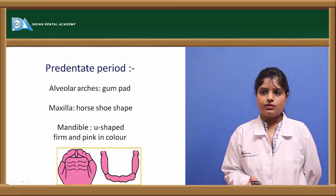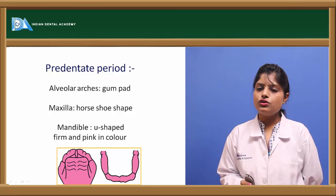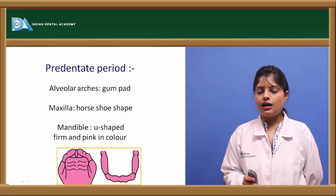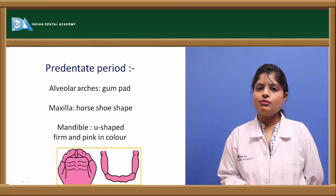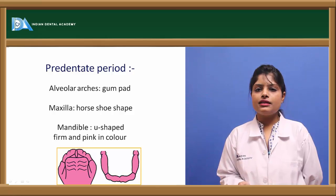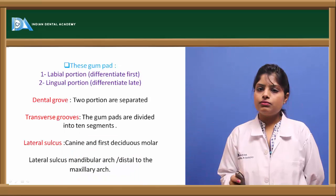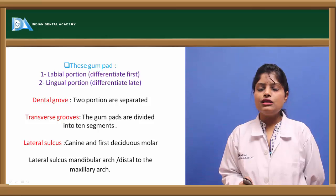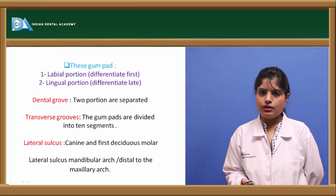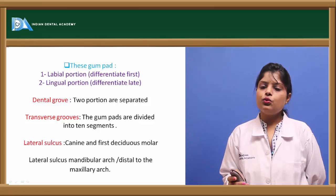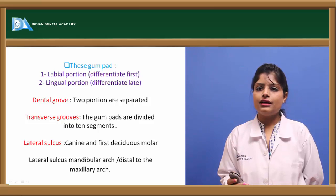The pre-dentate phase consists of the alveolar ridges or jaws, known as the gum pads. The maxillary gum pad is U or horseshoe shaped and the mandibular gum pad is U-shaped. They are firm, resilient, and pink in colour. A key feature is that they are divided into two sections by a dental groove, separating the larger labial portion from the lingual portion. Transverse grooves further divide the gum pads and lodge the tooth germs which will later erupt as primary teeth.